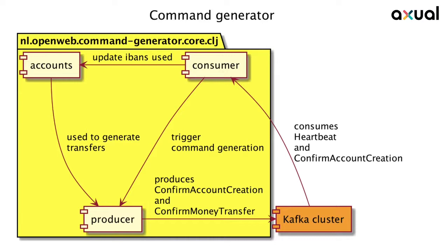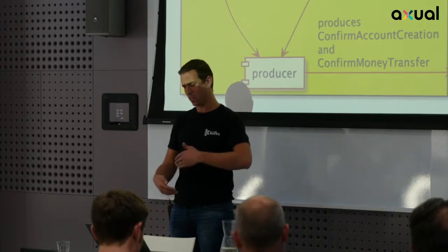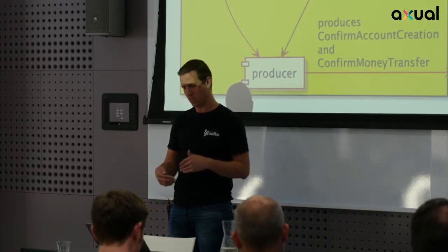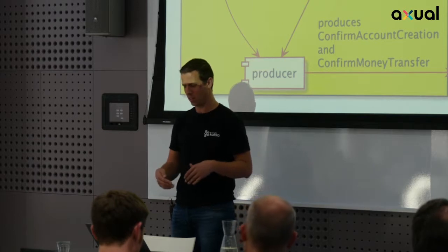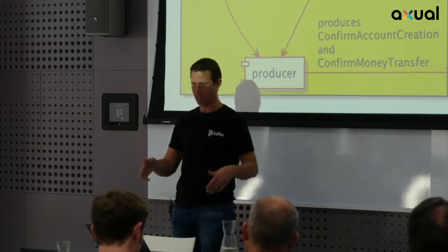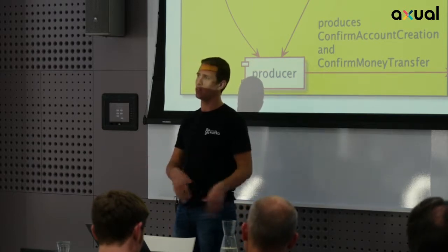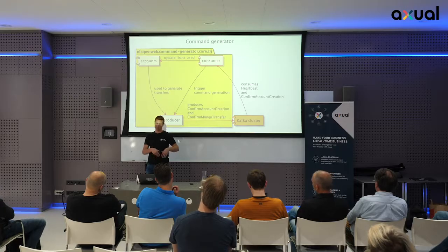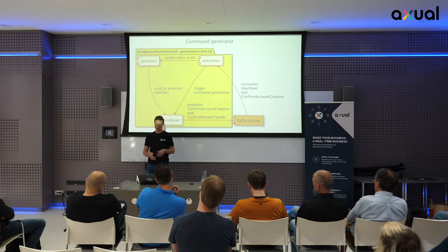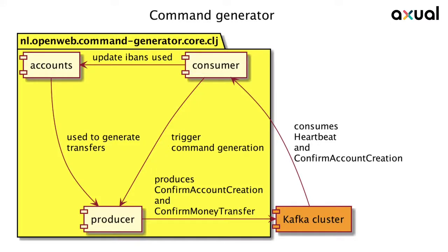The Command Generator reads messages from the HeartBeat — when the HeartBeat does nothing, it also does nothing. For each message it receives, it generates a command. There are only two commands in the system: one to generate an account and one to try to transfer money. Both could fail, so there's a succeed message and a failed message for each, all on separate topics.